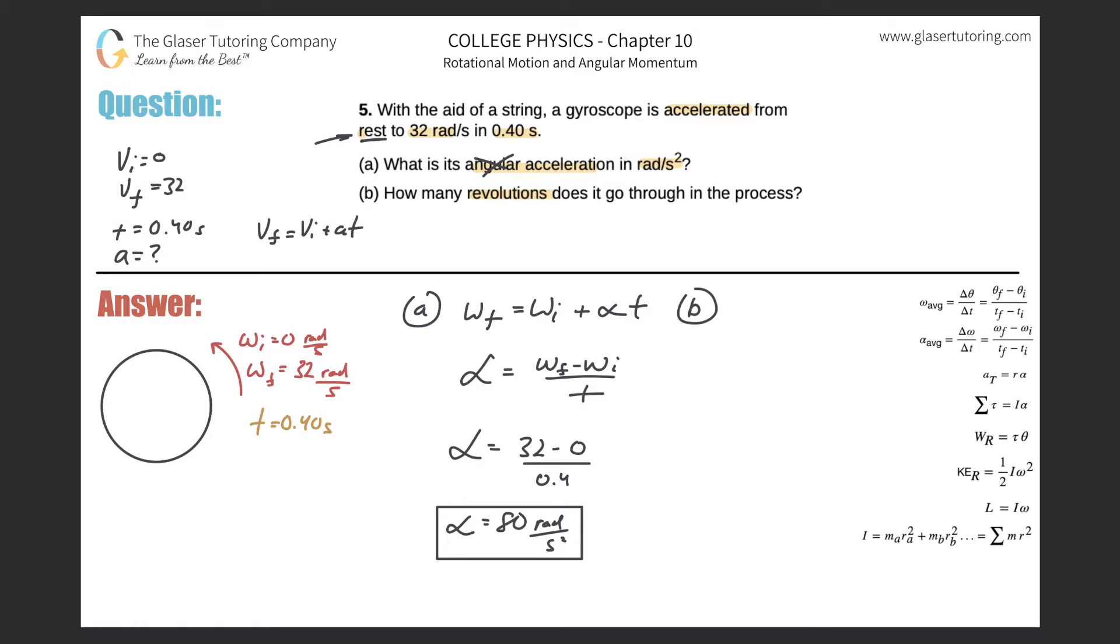Letter b: We have to find out how many revolutions it goes through in this process. In terms of the variable you're looking for, the revolutions—theta is in terms of radians. We need to calculate radians first in order to get to revolutions.